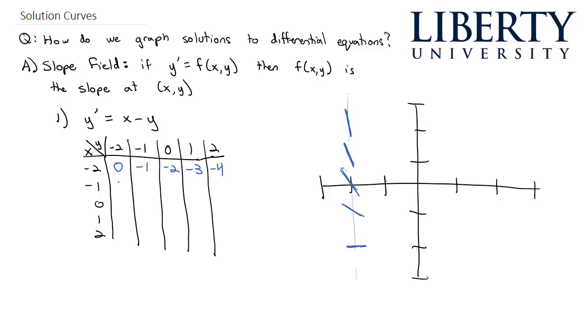When x is negative 1, negative 1 minus negative 2 is positive 1. Negative 1 minus negative 1 is 0. Then negative 1, negative 2, and negative 3. So if I go to where x is equal to negative 1 on that vertical line, at negative 1 comma negative 2, we have a slope of positive 1. At negative 1, negative 1, we've got a slope of 0, then a slope of negative 1, then a slope of negative 2, and then a slope of negative 3. And so we're kind of building the slope at each point.